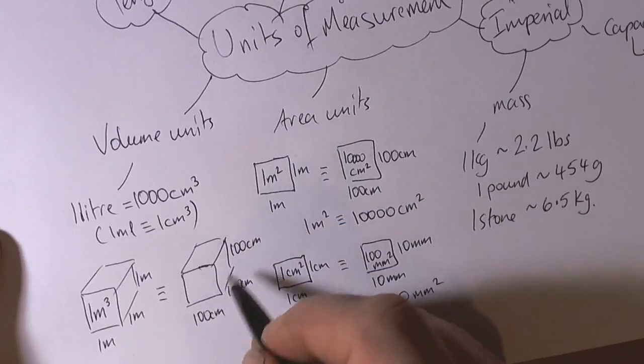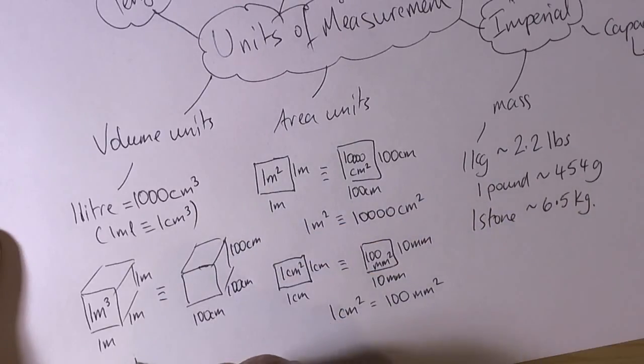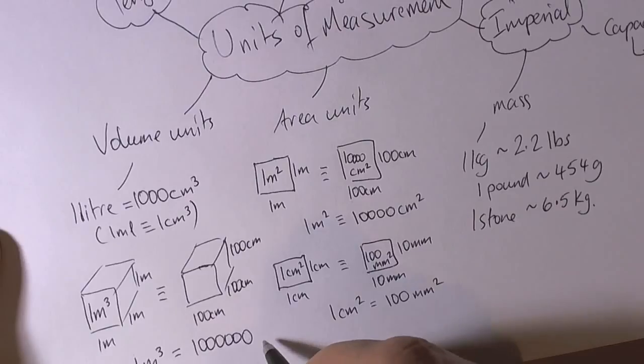and that would be the equivalent of 100 centimetres by 100 centimetres by 100 centimetres. And again, if we work out what all that multiplies to, then we find that 1 cubic metre is the same as a million cubic centimetres.